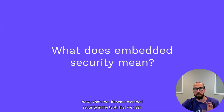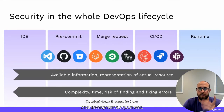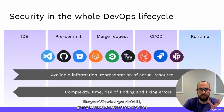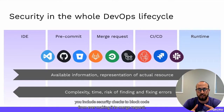What does it mean to embed security in the tools that you use? It means embedding it in every part of the software development lifecycle — starting in the integrated development environment like VS Code or IntelliJ, giving feedback directly there. Then pre-commit, before you have a merge request, you include security checks to block code from ever making it to a merge request.